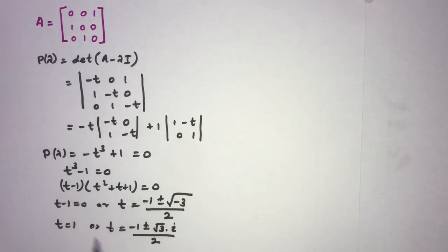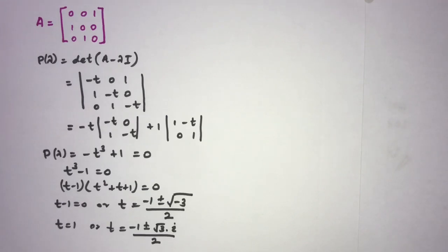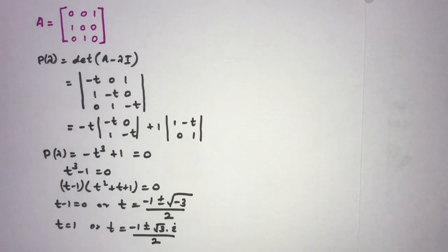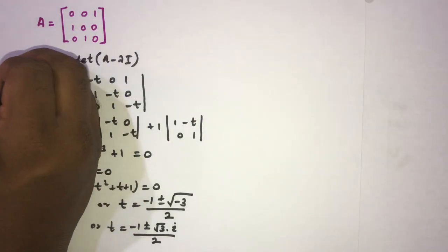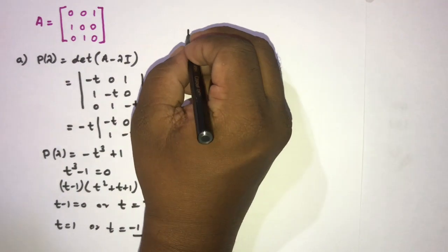We have three distinct eigenvalues. The question asks whether this matrix is diagonalizable over the complex numbers. By theory, if an n×n matrix has n distinct eigenvalues — whether real or complex — the matrix is diagonalizable. Therefore, matrix A is diagonalizable over the complex numbers. That completes part a.